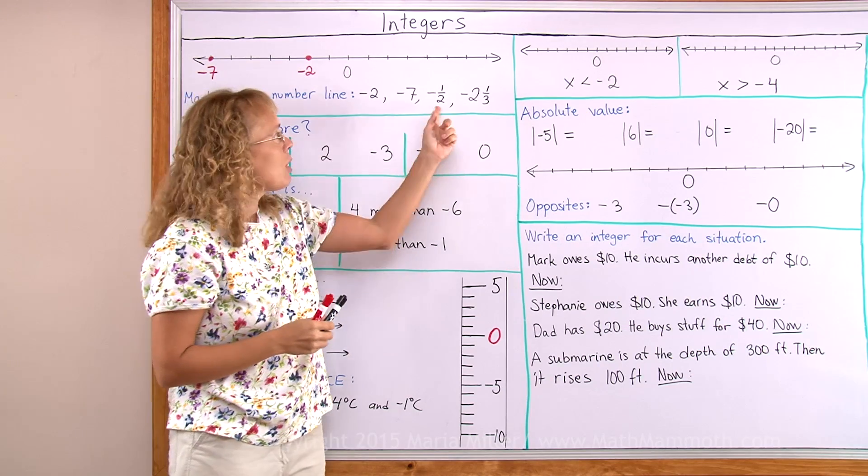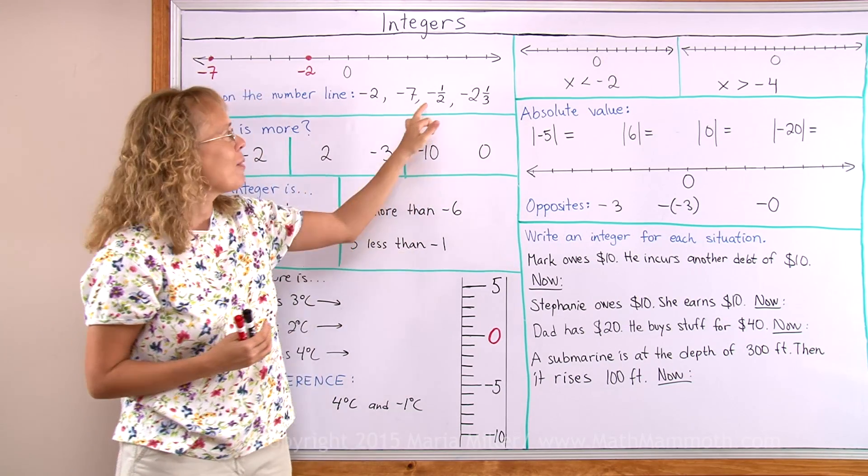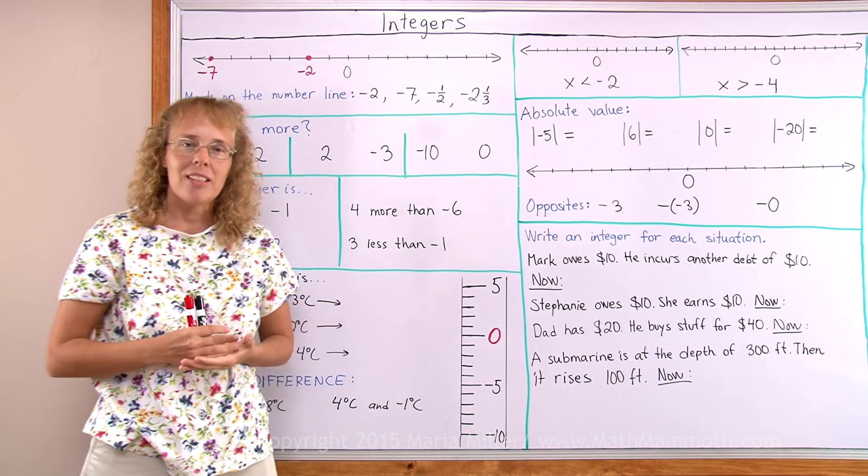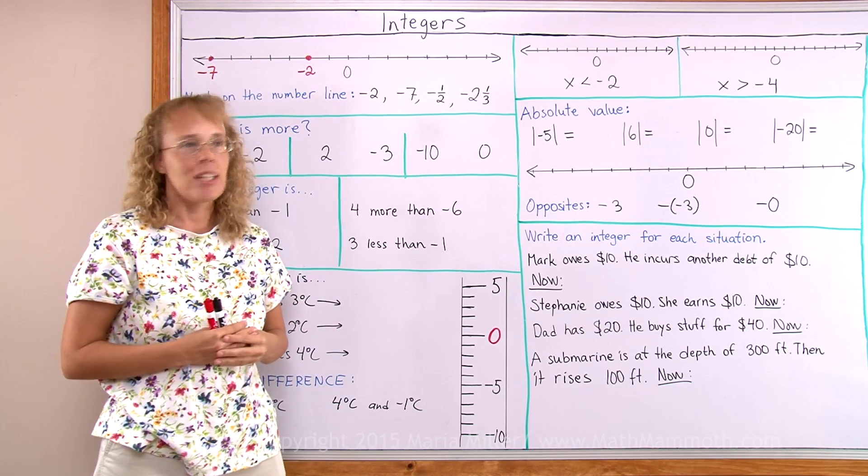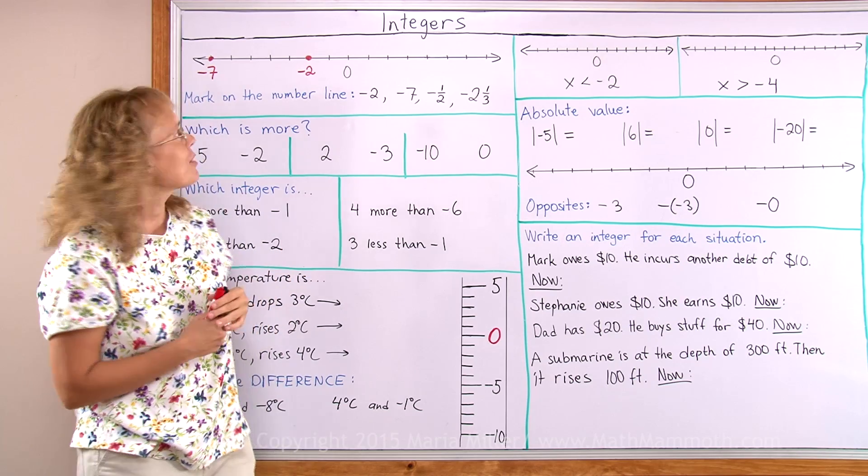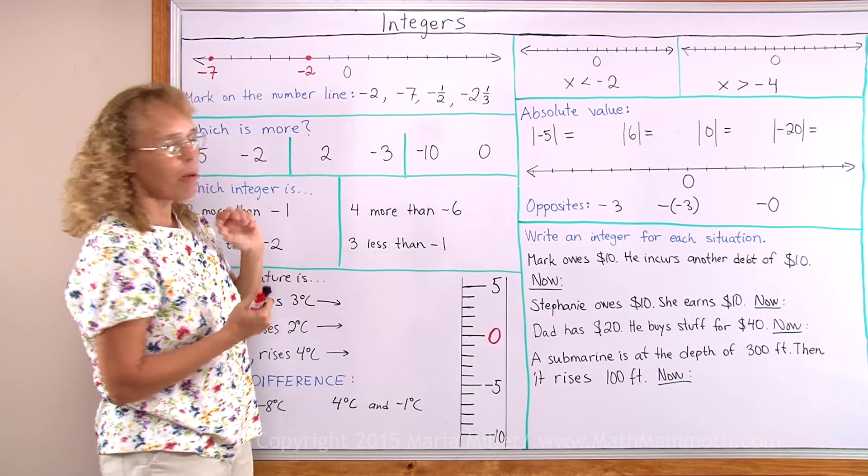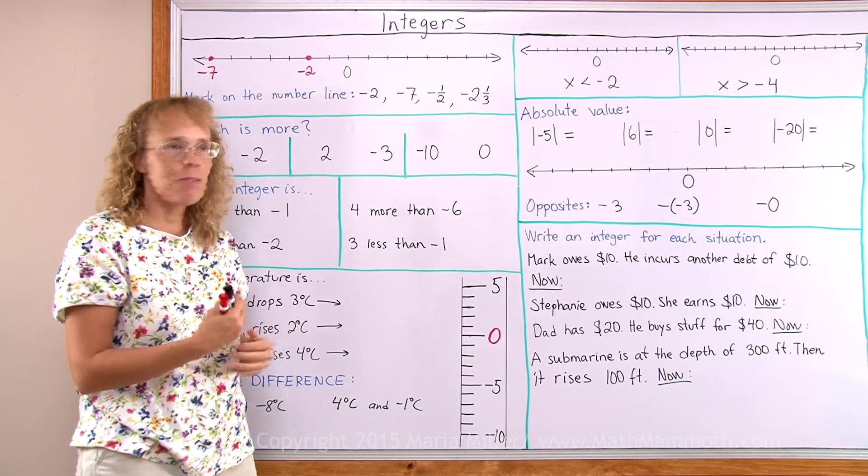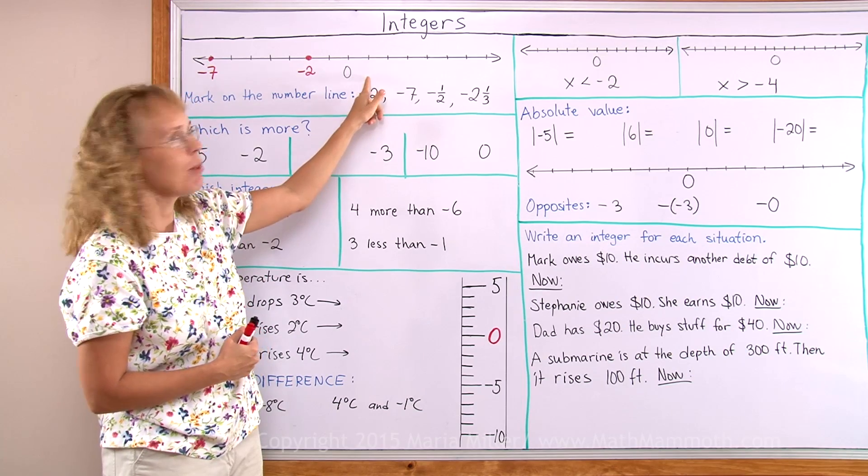Then these two numbers are not integers. But we want to practice finding them on the number line too. Negative 1 half. If you know where 1 half is, the positive 1 half is between 0 and 1.